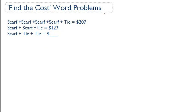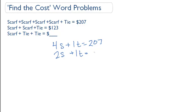This problem asks us to find the cost. It says four scarves plus one tie equals two hundred and seven dollars. Then it says two scarves plus one tie equals one hundred and twenty three dollars. And it asks us to find the cost of one scarf plus two ties.